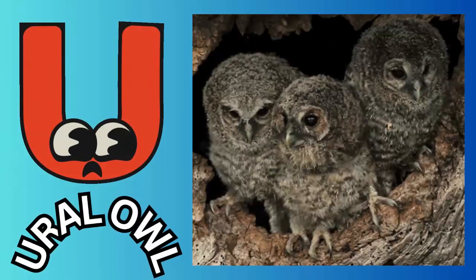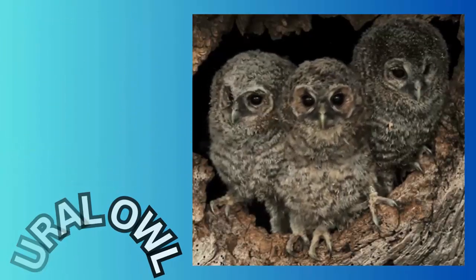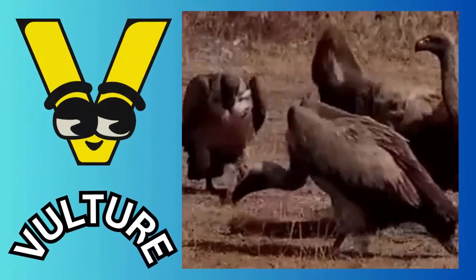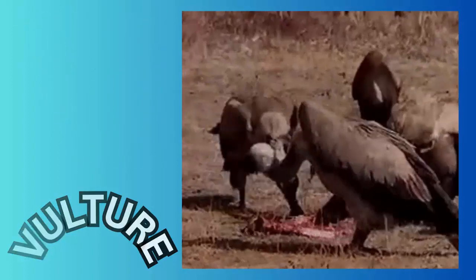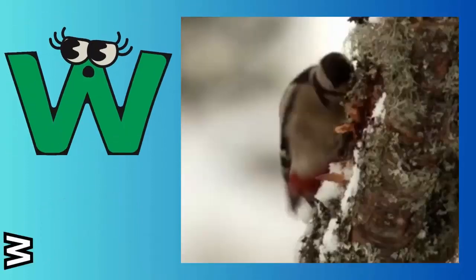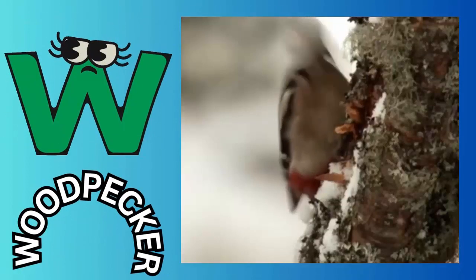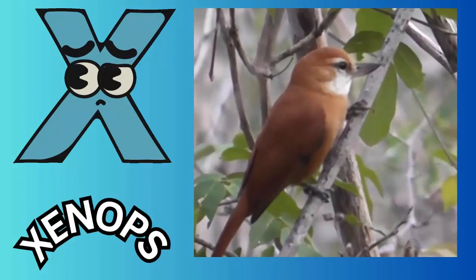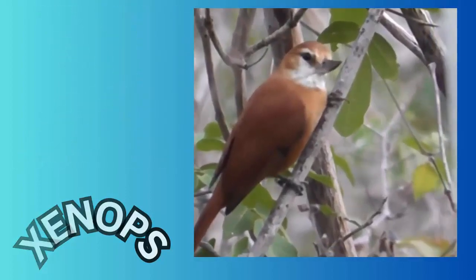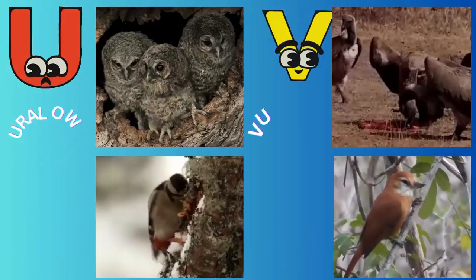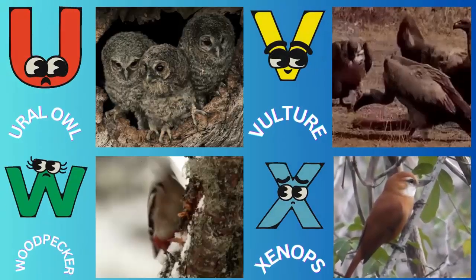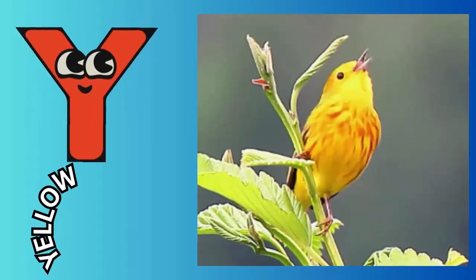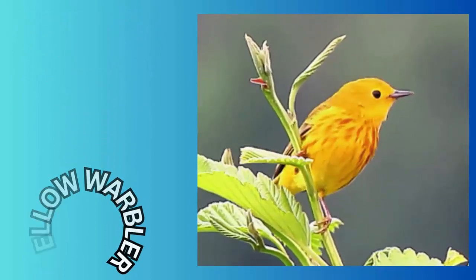U. U for ural owl. V. V for vulture. W. W for woodpecker. X. X for xenops. Y. Y for yellow warbler.